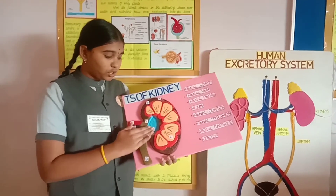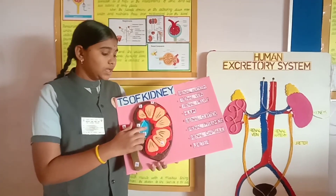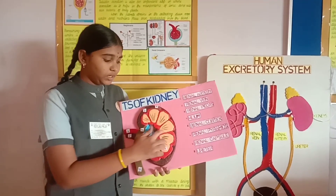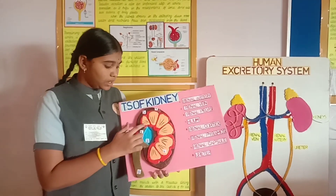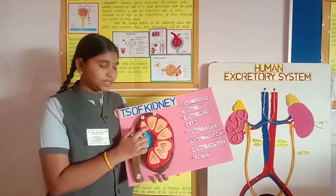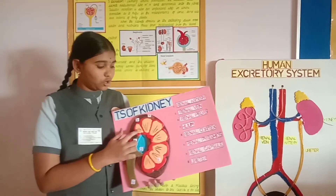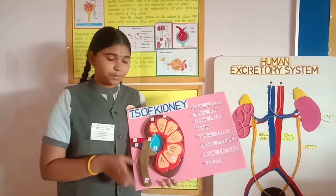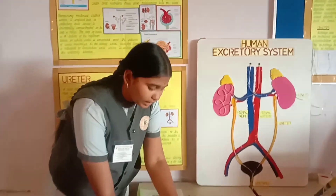Inner to the hilum there are spaces called renal pyramids. This further continues into calyx and the conical masses which are in triangular shape are called medullary pyramids. This is the structure of the kidney.